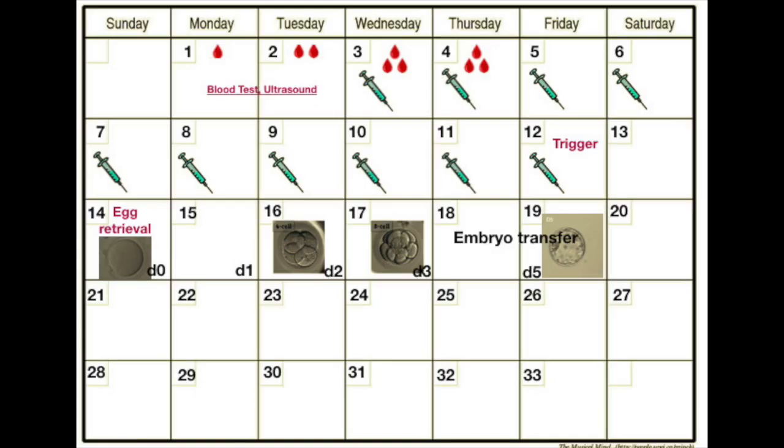So the egg retrieval would fall on around day 14 of the woman's cycle. These eggs are retrieved and this is counted as day zero of the embryos. The embryo transfer can be done on day three, day four, or day five of embryo development.